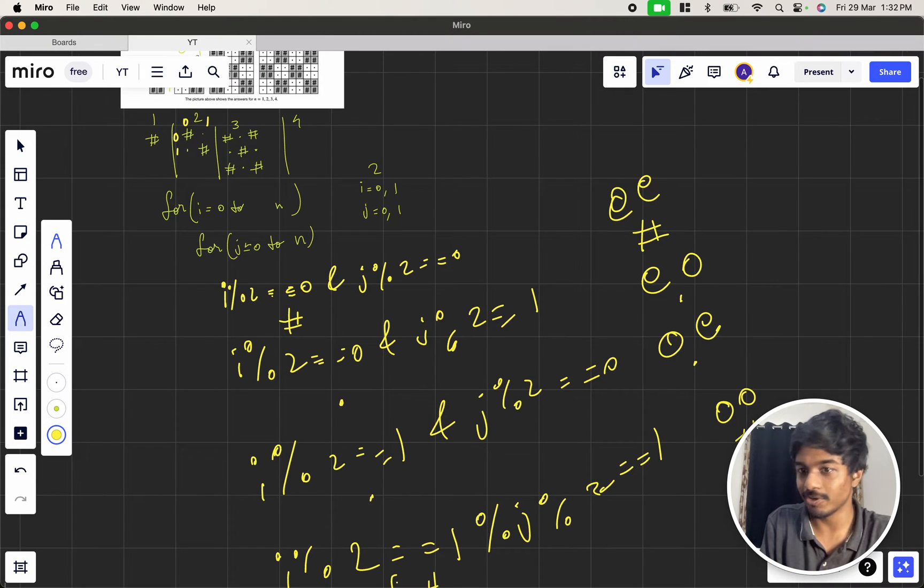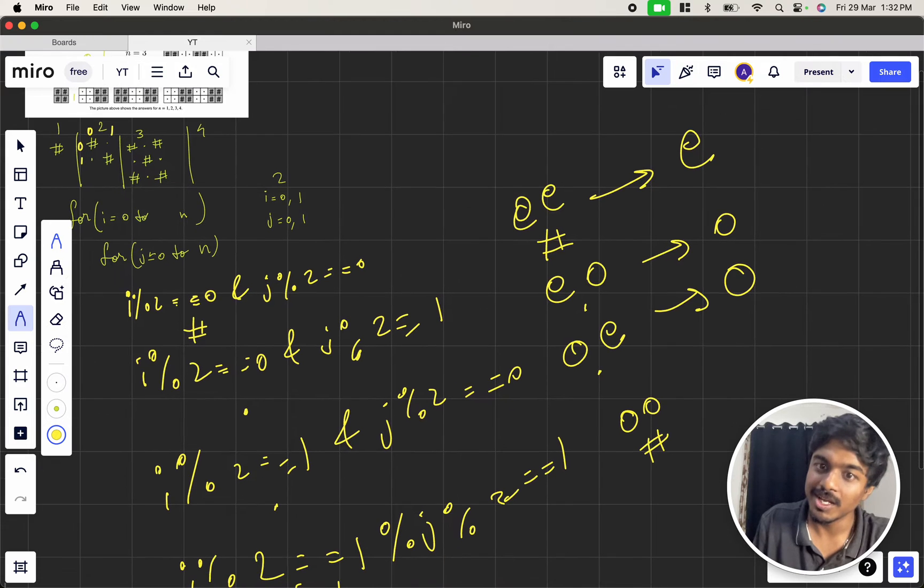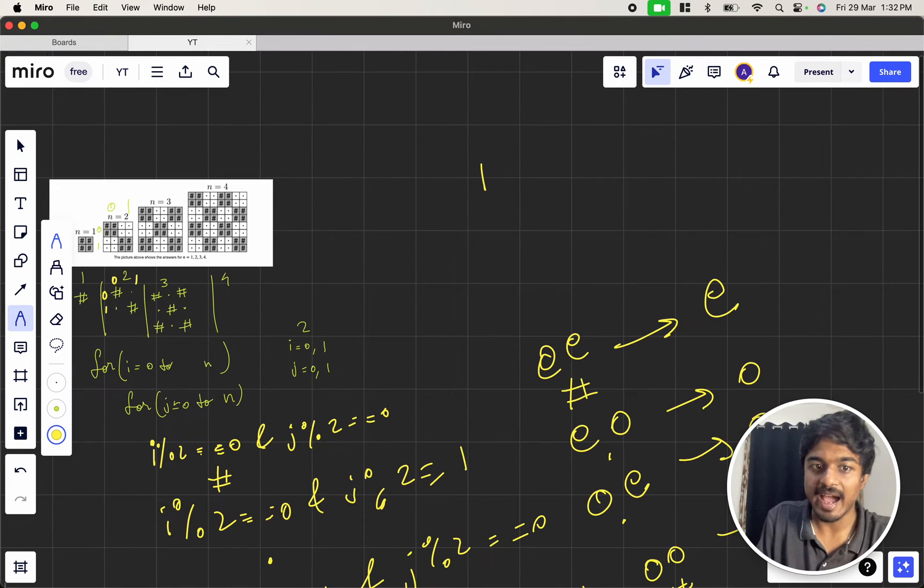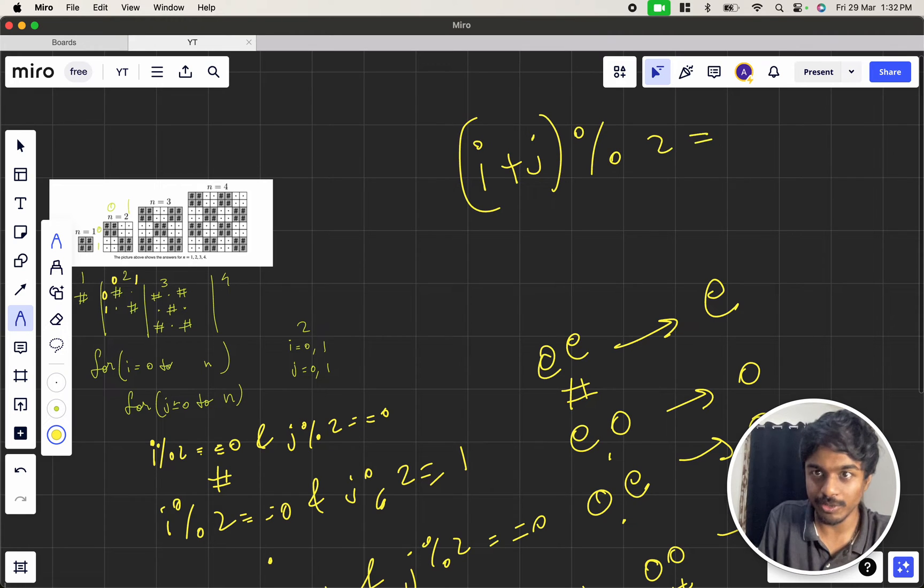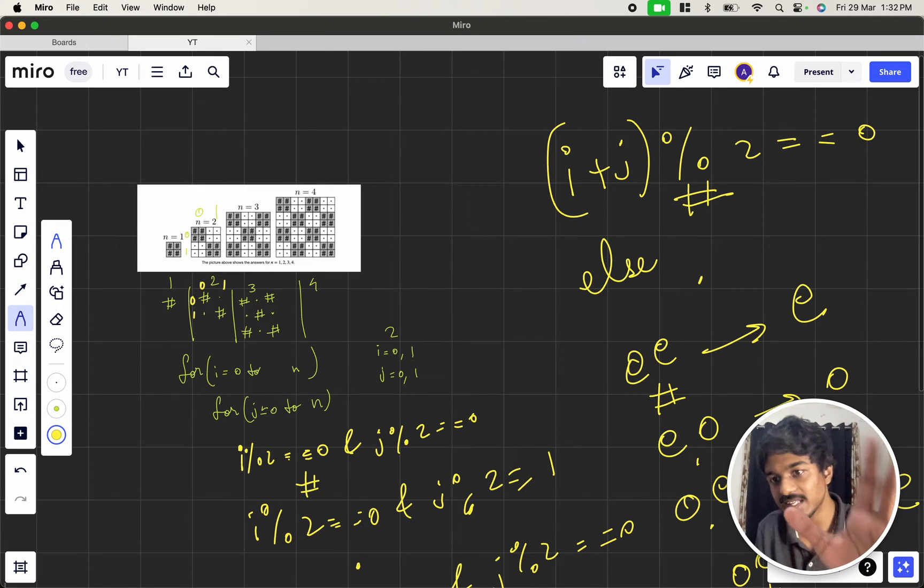I can simplify. Odd plus even is always odd, even plus even is even, odd plus odd is also even. So I can simplify this and write like (i+j) mod 2 equal to 0. If this is even print hash, else you print dot. So we solved for this problem in two loops. But the question is they told you have to print it multiple times.